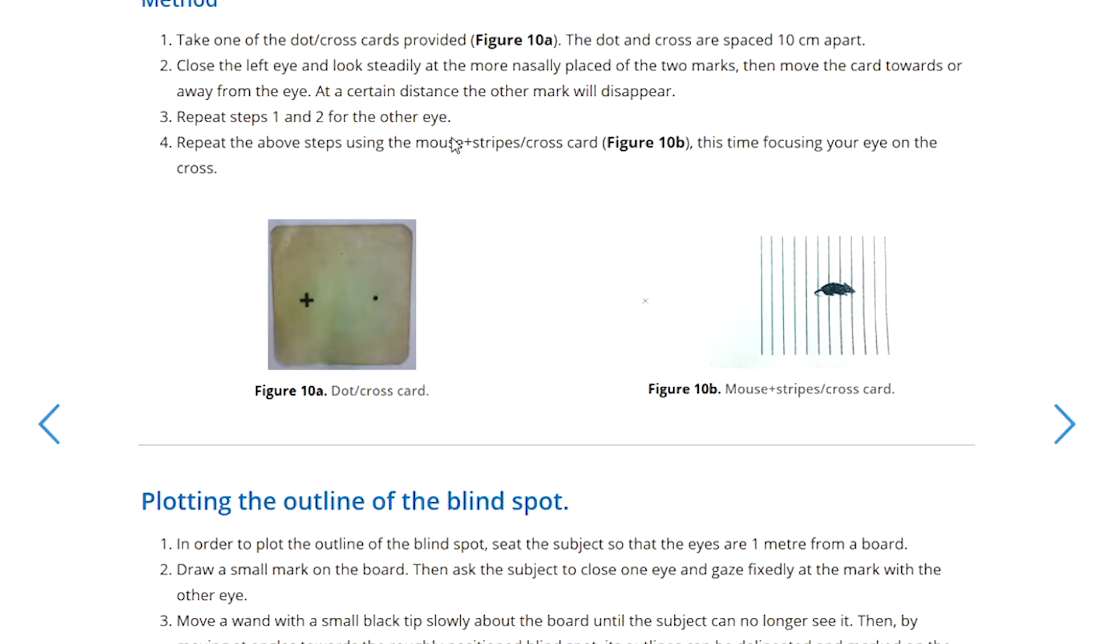First of all, you will be provided with links to these two blind spot cards. The first one should have a dot and a cross on it, and the second one should have a cross and then a rat sitting in a field of lines.